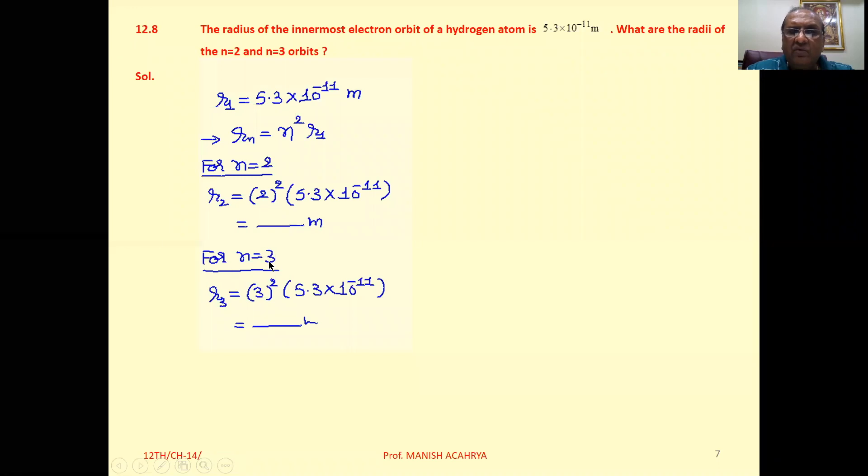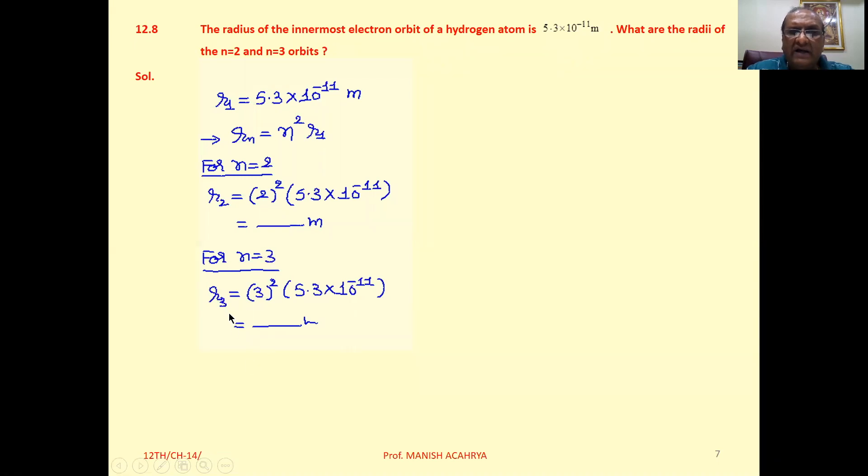Then take n=3, you will get R3 = 3² × 5.3 × 10^-11. Solve this one, you will get the answer.